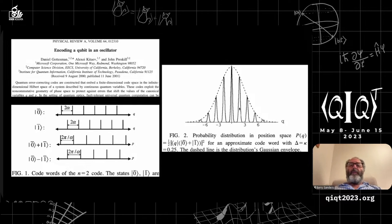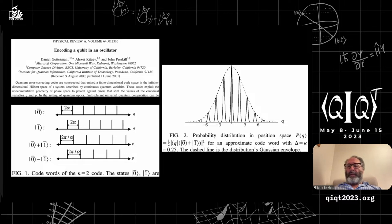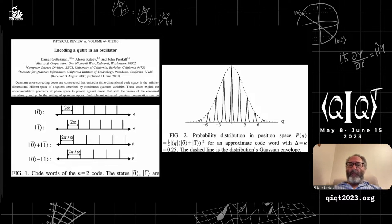An infinite comb of infinitesimally thin, perfectly squeezed states is not possible, so they analyzed approximate versions with squeezed states of some finite width. It turns out that if you can get seven good teeth in the comb, you can get scalable quantum error correction. Companies like Xanadu in Toronto are building these things now. The whole idea of superpositions of coherent states now underlies the strategy of a billion-dollar company like Xanadu.